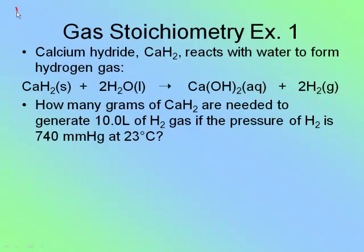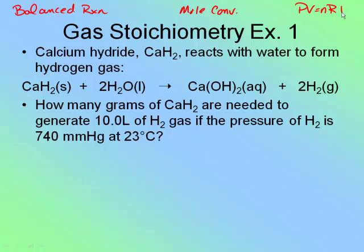Remember, there are three things you have to do: use your balanced reaction, do some sort of mole conversion, and use PV = NRT. There are only two types of gas stoichiometry problems — ones where you use PV = NRT first, and ones where you use PV = NRT last. You can't really tell from the beginning which one until you lay out the information you have.